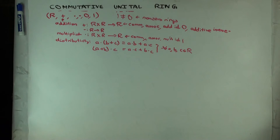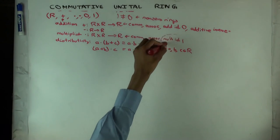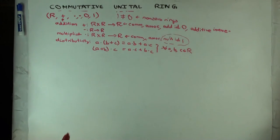Now, excuse me, where does the unital come from? The unital just means there's a multiplicative identity. This means commutative ring with one. Some people just say commutative ring with one.